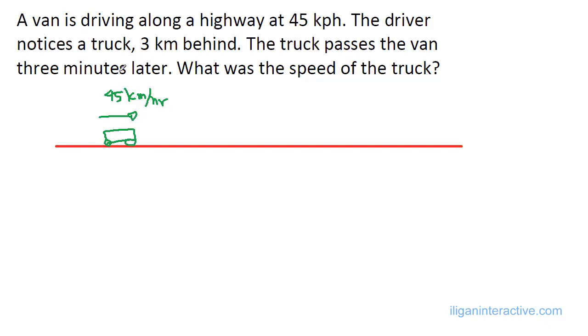The driver notices a truck 3 km behind it. 3 km is quite far. Let's just draw here 3 km somewhere. Maybe the truck is somewhere. Let me try to draw a two-lane road, assuming there's two lanes so that they will not really hit each other. I think I'll just transfer this one because 3 km is not very near.